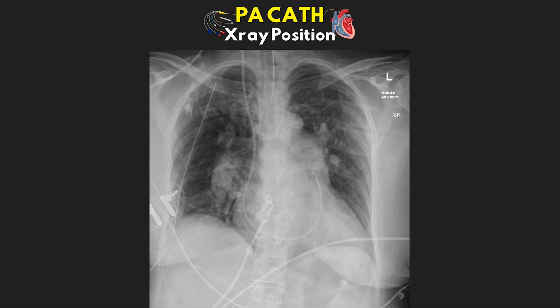For example three, following our PA catheter along, we can see it's again inserted right IJ, going through the right atrium, through the right ventricle, but this time the tip of the SWAN is just in the pulmonary artery. We can tell that in relation to that left main stem. While this isn't necessarily a bad position, it isn't giving us a true zone 3 representation of our left atrial pressure, and this one is also at higher risk to get pulled back into the right ventricle.